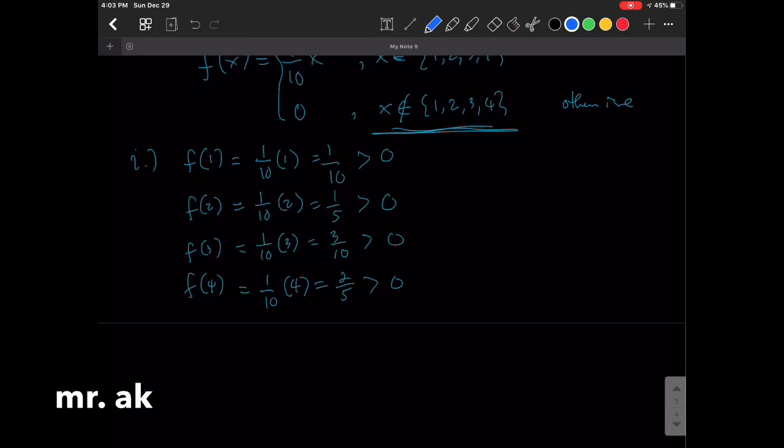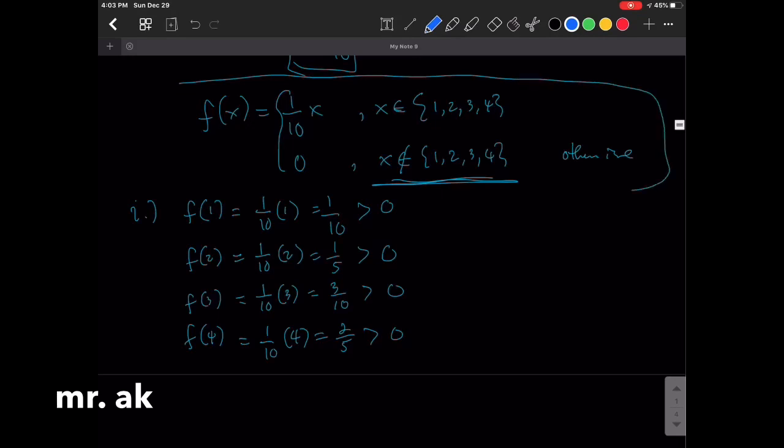If x is not in the support, the probability is 0. And so, therefore, this function satisfies the two conditions of a probability mass function.